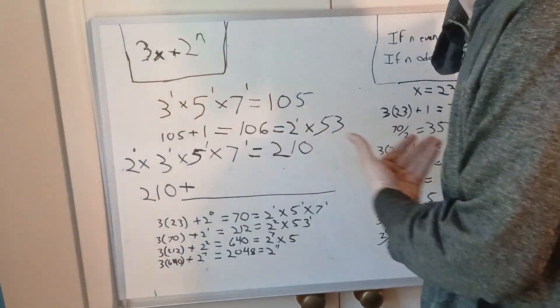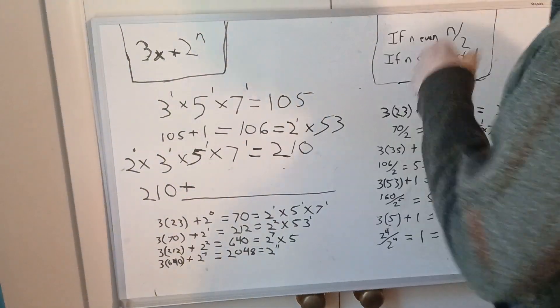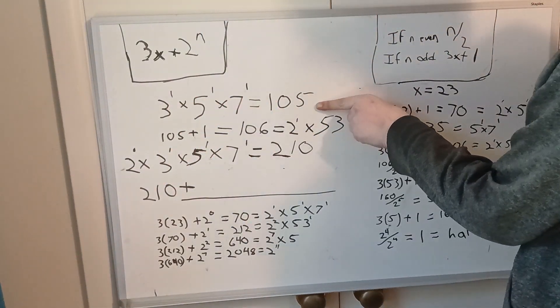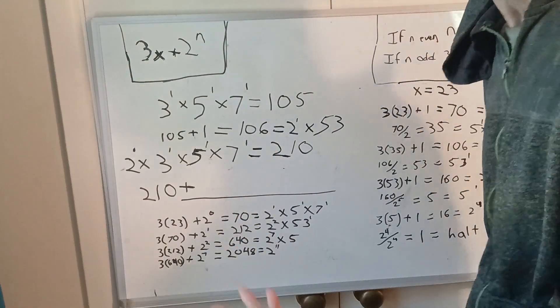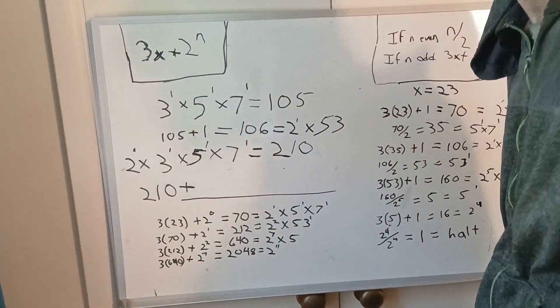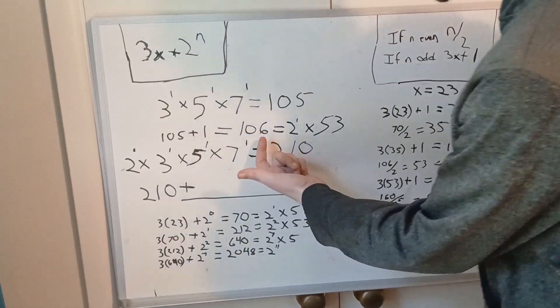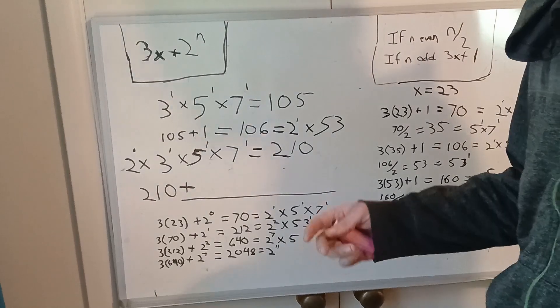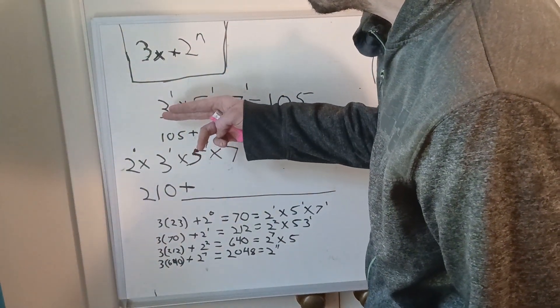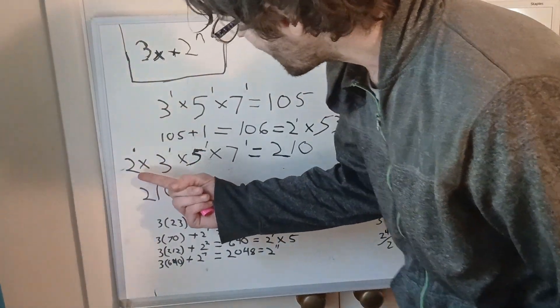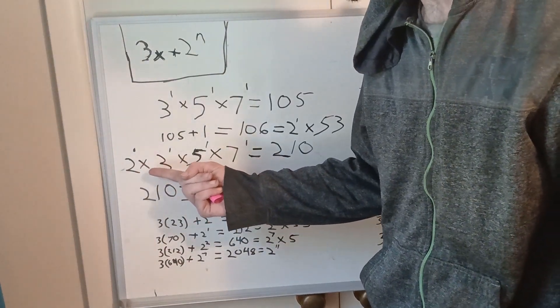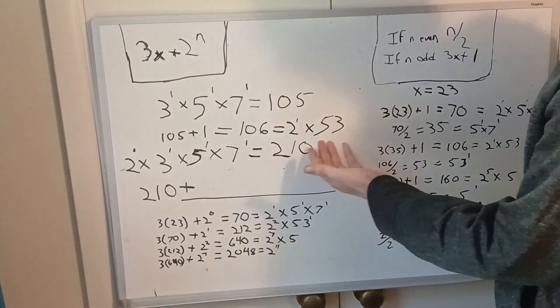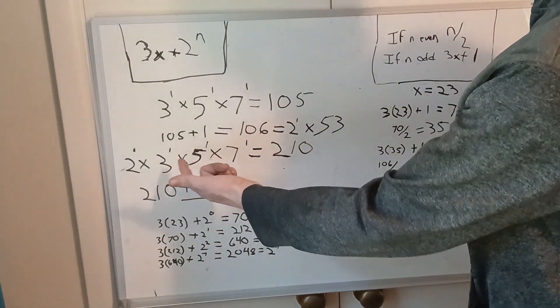The first number we're going to consider is 3×5×7, all to the 1, that's the prime factorization of 105. If I want to make that number proceed to its consecutive co-prime state by adding 1, it goes to 106, prime factorization of that is 2 to the 1 times 53. Now take that same number and imagine I double it and add 2 to the 1 as part of its prime factorization.